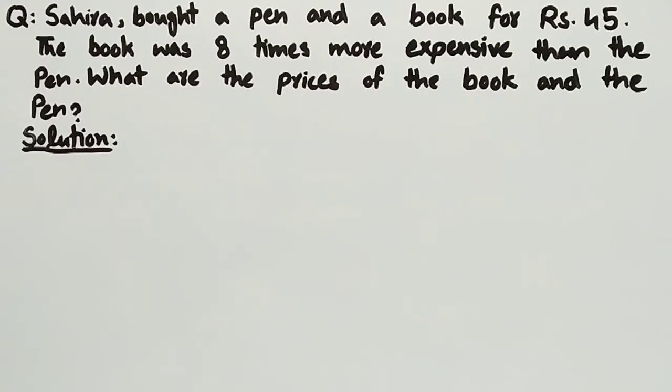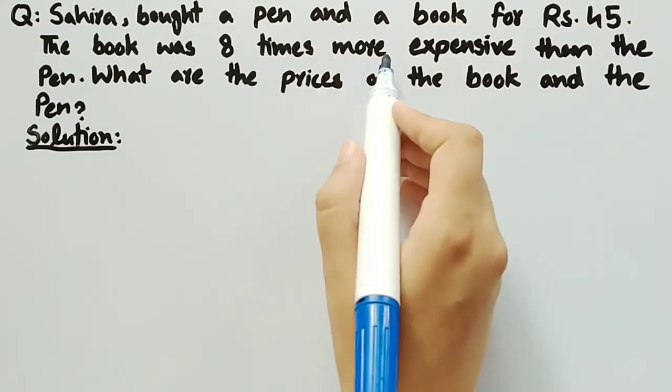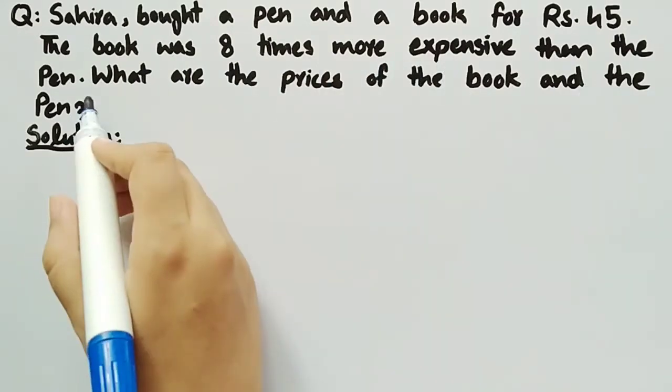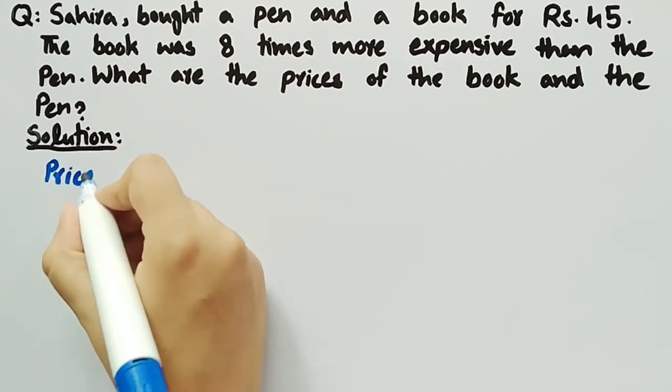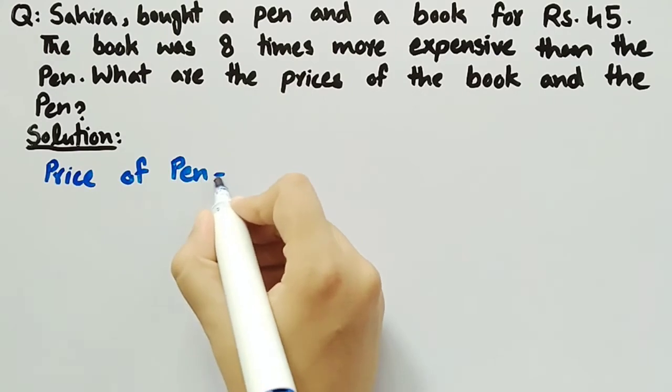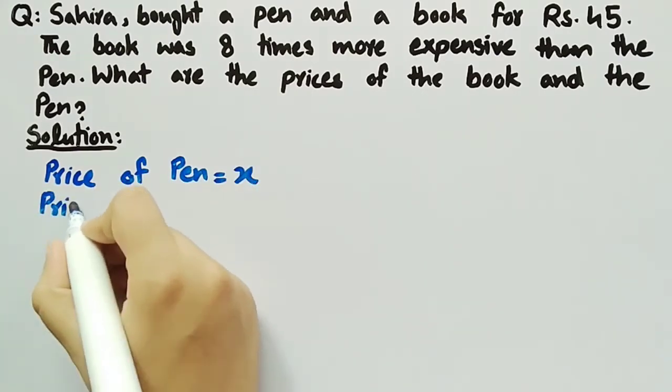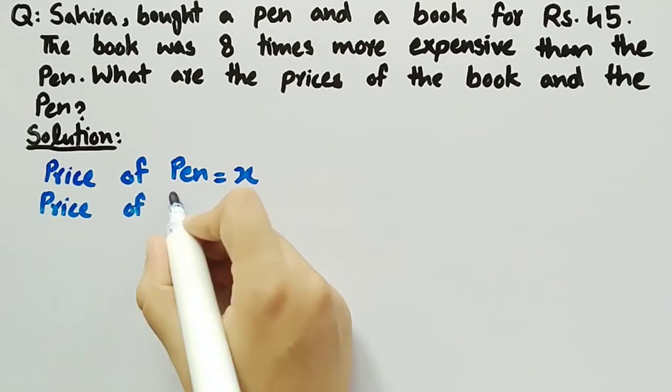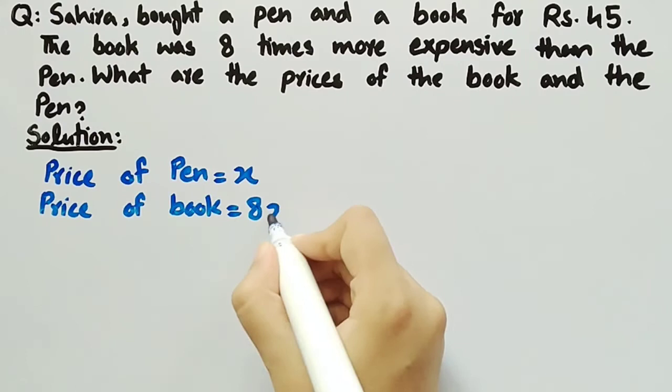Now coming towards its solution. It is given that the book was 8 times more expensive than the pen. So we consider the price of pen equal to x and price of book equal to 8x.